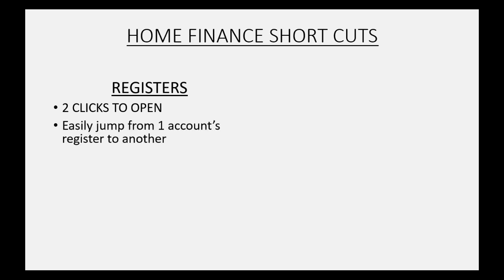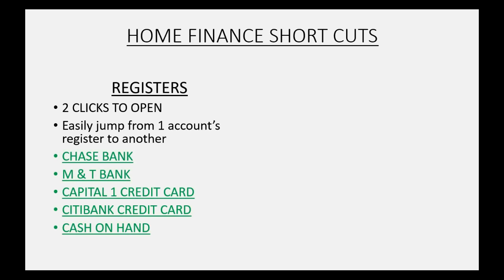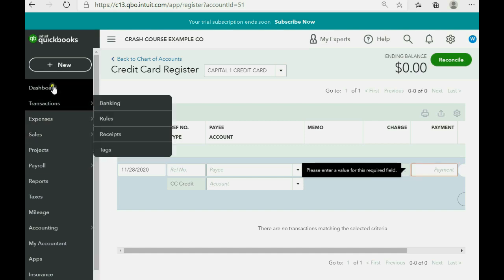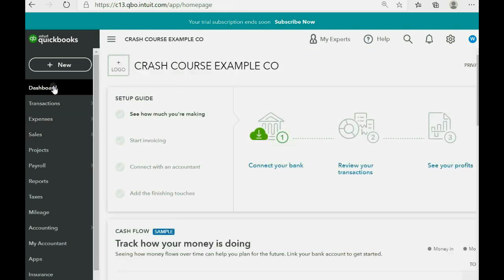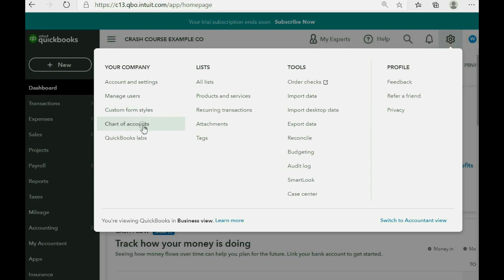For home finance you can set up some shortcuts for registers. It only takes two clicks from the time you log in to open the register window, and it's easy to jump from one account's register to another. These are the four or five operating type of accounts that we put into the chart of accounts — the accounts that we pay money from — and we have to keep separate records of each account's balance. If you're in the dashboard, you simply open the chart of accounts in either of the two ways we learned.